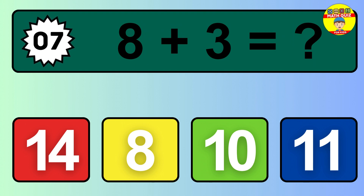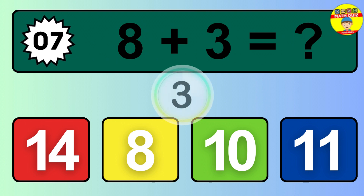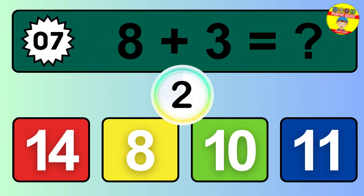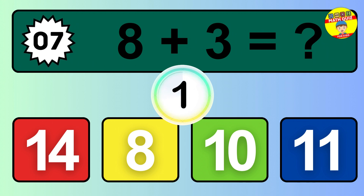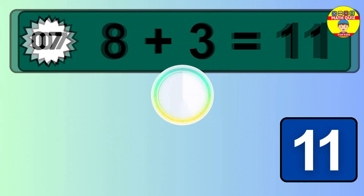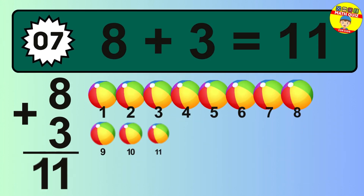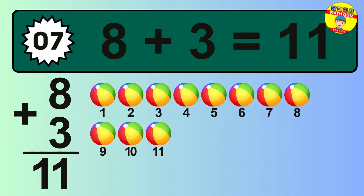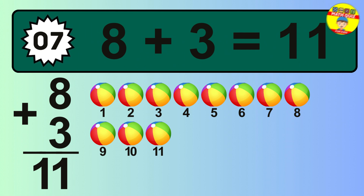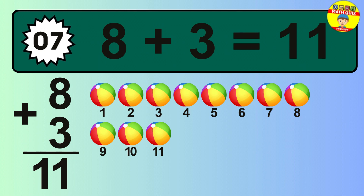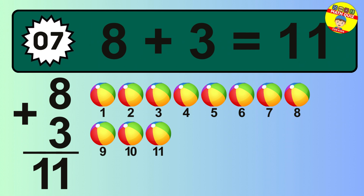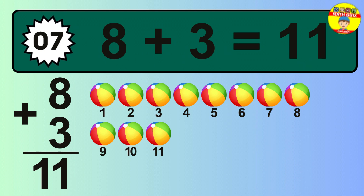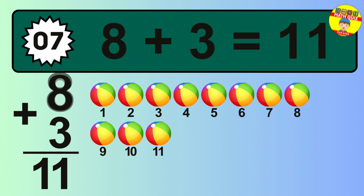Question 7. 8 plus 3 equals what? So the answer is 8 plus 3 is 11. Let's count it: 1, 2, 3, 4, 5, 6, 7, 8, 9, 10, 11.